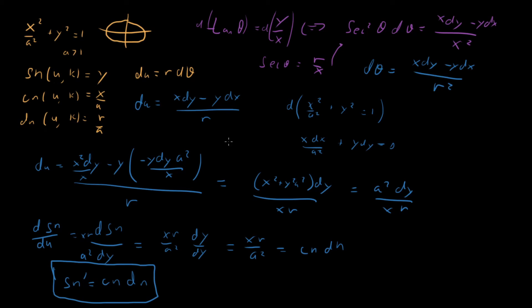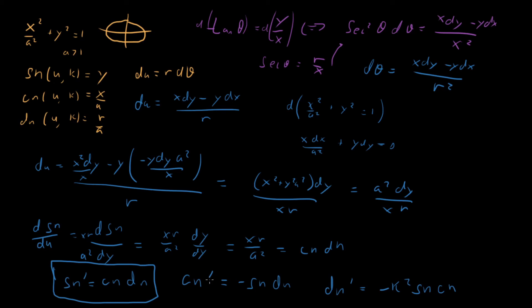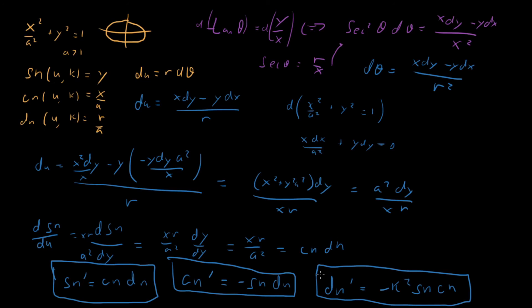For cn′ and dn′, you can work through the same type of argument. The results are: cn′ = −sn · dn, and dn′ = −k² · sn · cn. A nice pattern emerges: the derivative of any Jacobi elliptic function is expressed in terms of the other two. sn′ involves cn and dn; cn′ involves sn and dn; dn′ involves sn and cn.